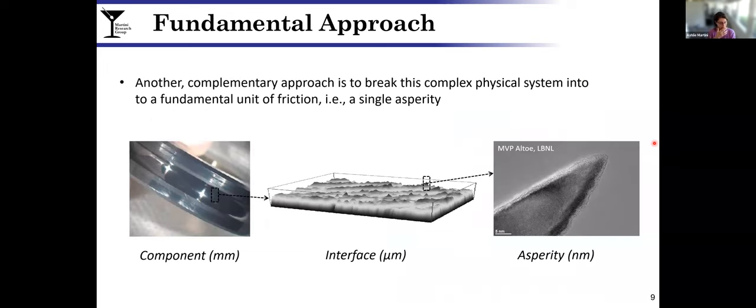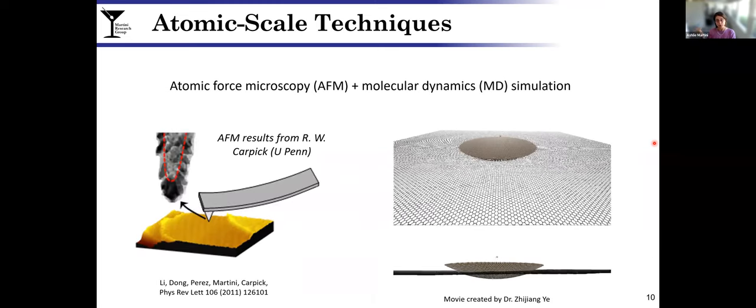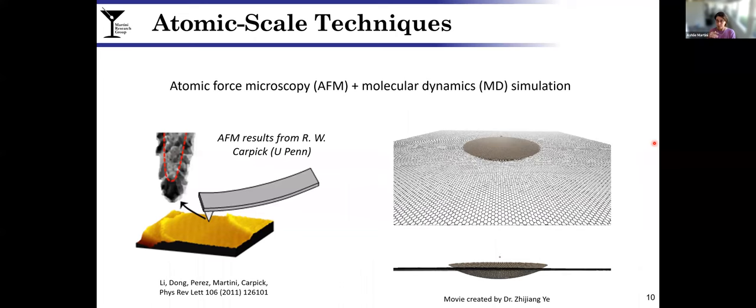Complementing empirical approaches are fundamental studies, and this is what I'm going to be showing you here today. The concept is that if we look really closely at the surface of an MoS2 coated component, we see that it comprises many asperities. If we can look at just one single asperity and understand its friction operation, perhaps we can scale that understanding up to larger components and potentially provide guidance for design.